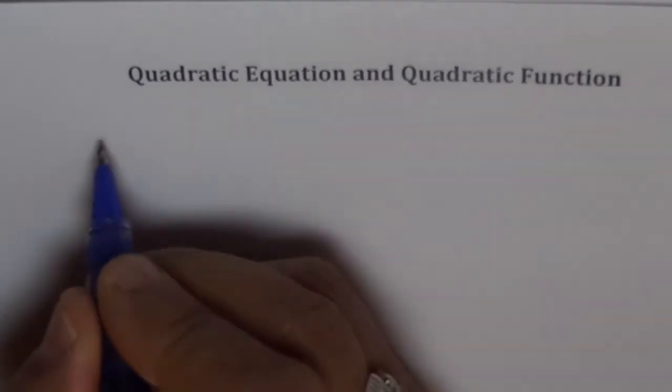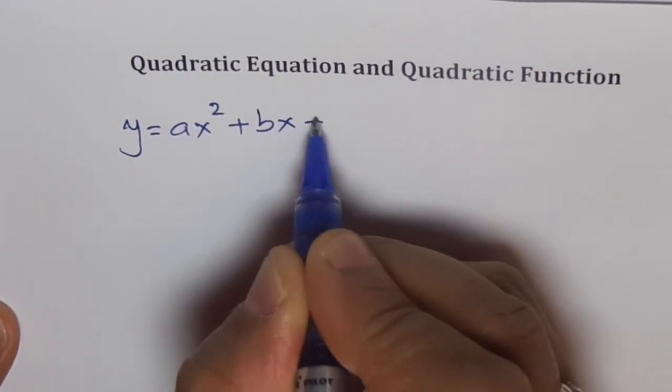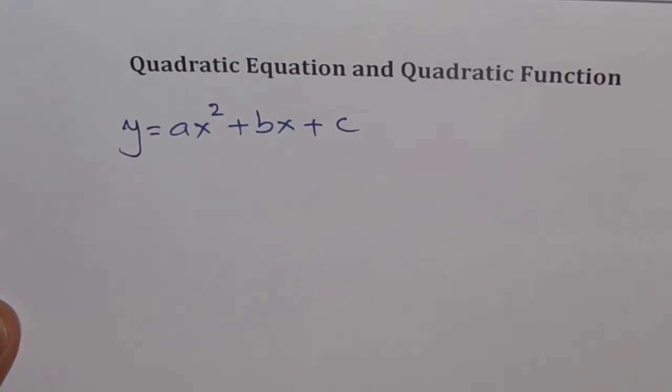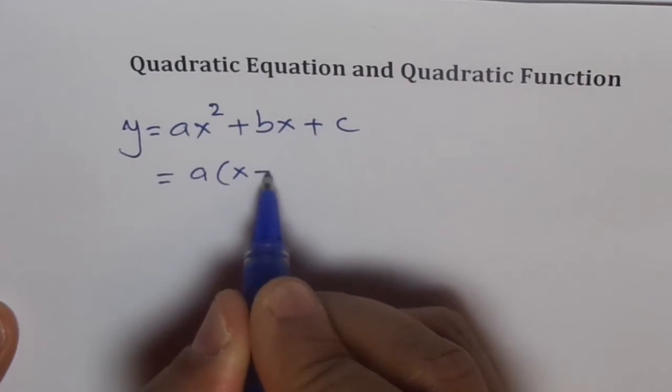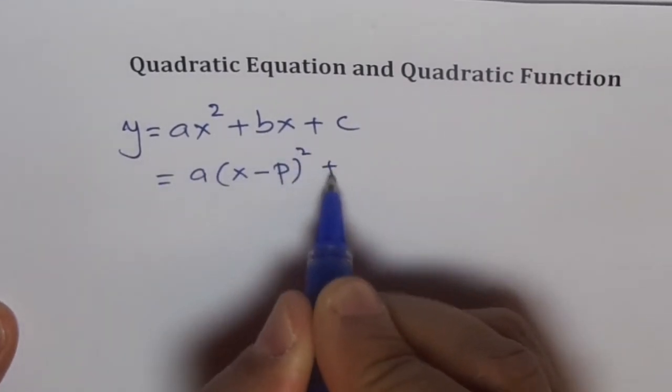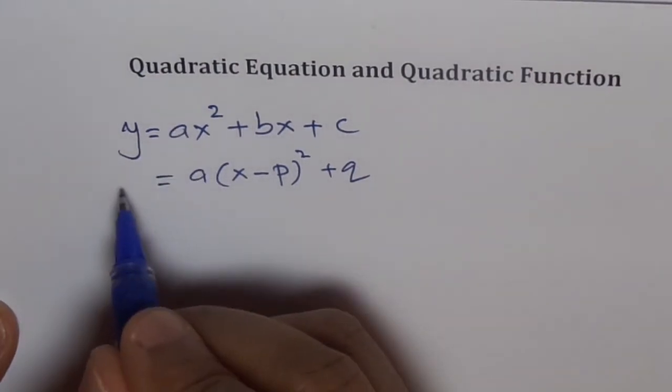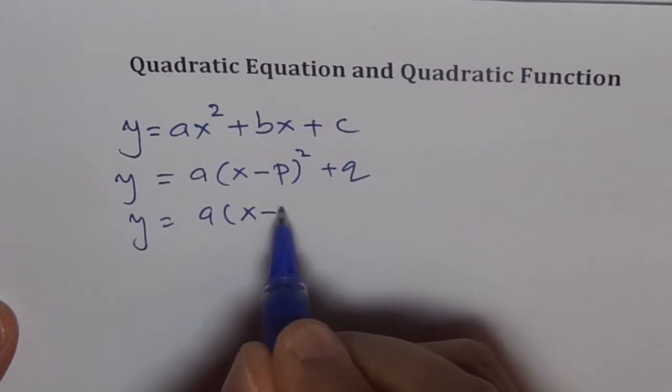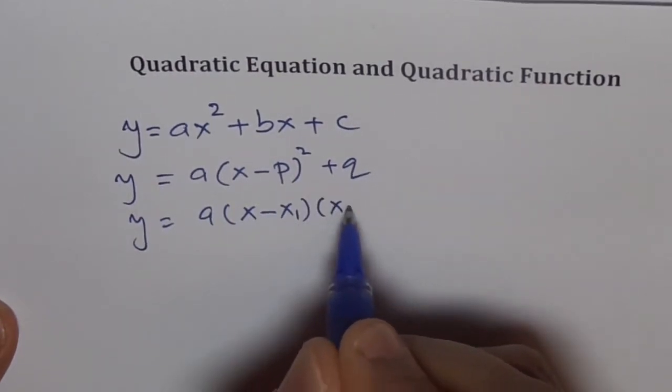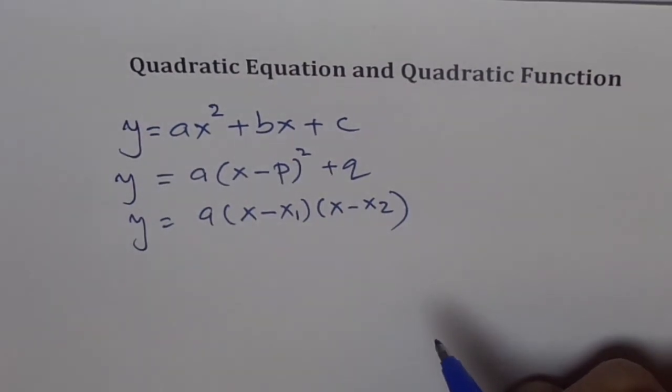You remember a quadratic equation can be written as y equals ax squared plus bx plus c. It could be represented in different ways. For example, vertex form: y equals a times x minus p whole squared plus q. Or it could be written as a times x minus x1 times x minus x2, where x1 and x2 are your x intercepts.